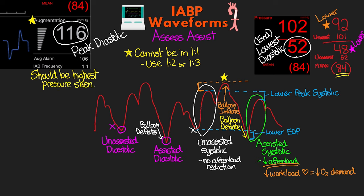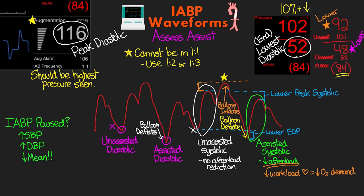We must be in either a 1-to-2 or 1-to-3 to compare these assisted versus unassisted numbers. We want to see lower assisted values for both systolic and diastolic, and we usually like to see at least a 10% or more reduction in those pressures. Also, if the balloon pump were to be paused, you would see higher systolic and diastolic values, but because we would lose that large augmentation pressure, the patient's mean pressure would actually fall. Hopefully that all makes sense — being in a 1-to-2 frequency really makes it easier to see the assistance and how it's affecting our patient's hemodynamics.